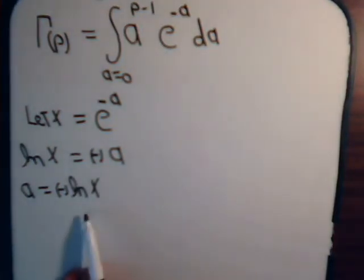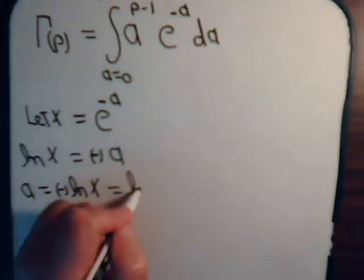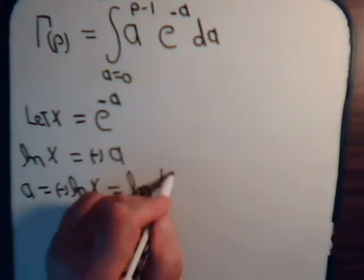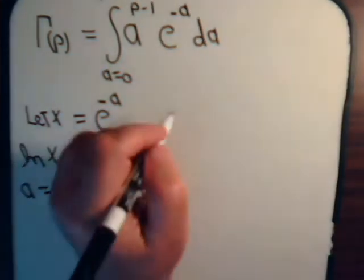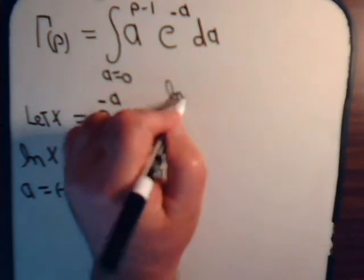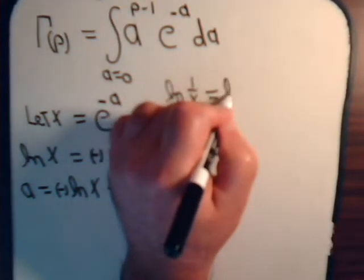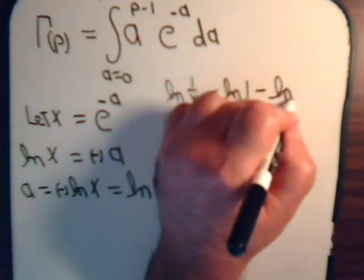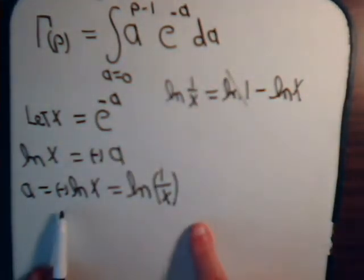And this, that is the natural log of 1 over x. That, of course, equals the natural log of 1 minus the natural log of x. That, of course, is 0. So, we can write it either way.